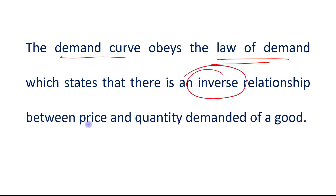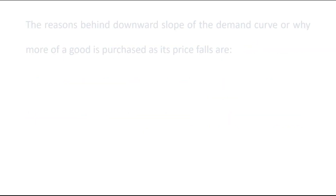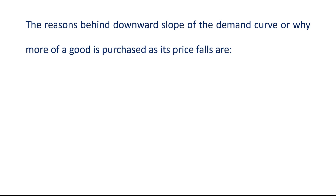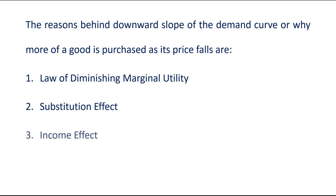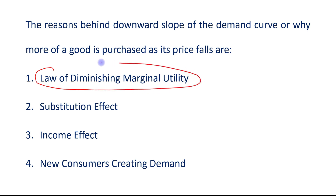The reasons behind the downward slope of the demand curve, or why more of a good is purchased as its price falls, are: first, law of diminishing marginal utility; second, substitution effect; third, income effect; and fourth, new consumers creating demand. In this part one, we will discuss the first reason, which is the law of diminishing marginal utility.